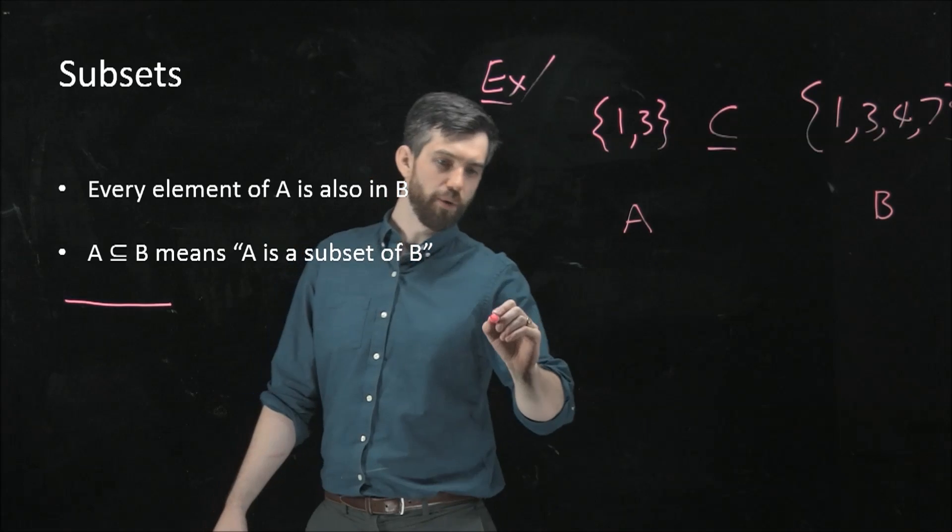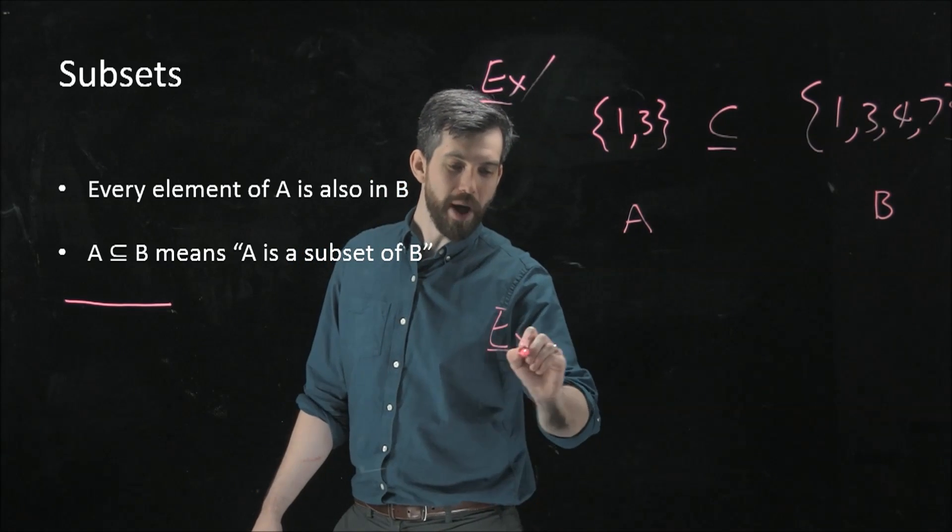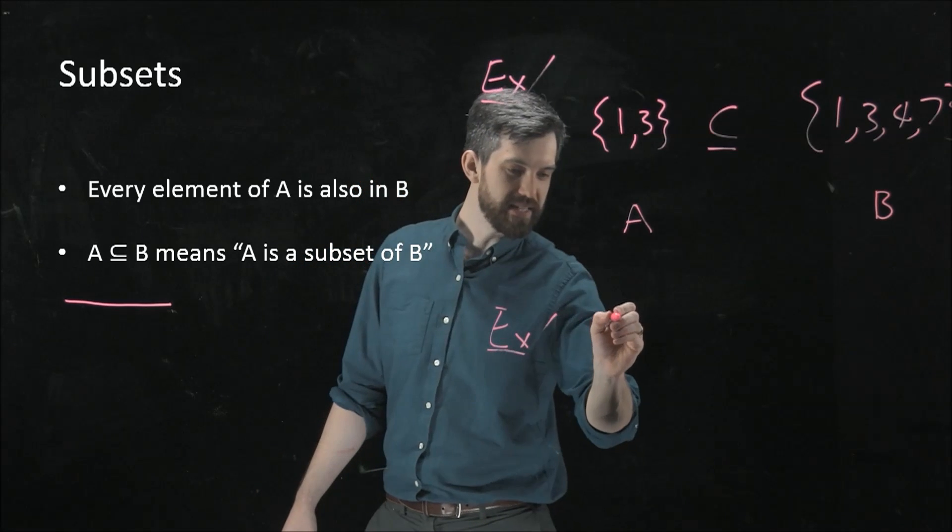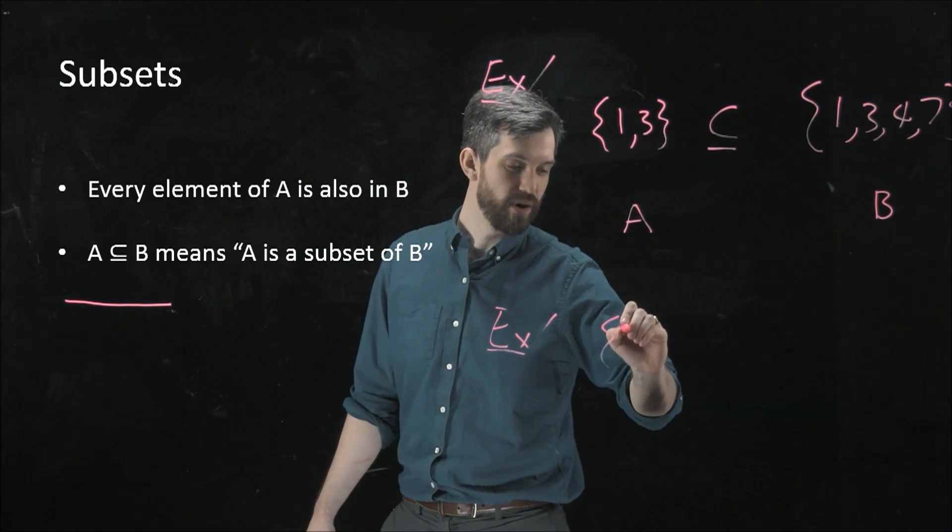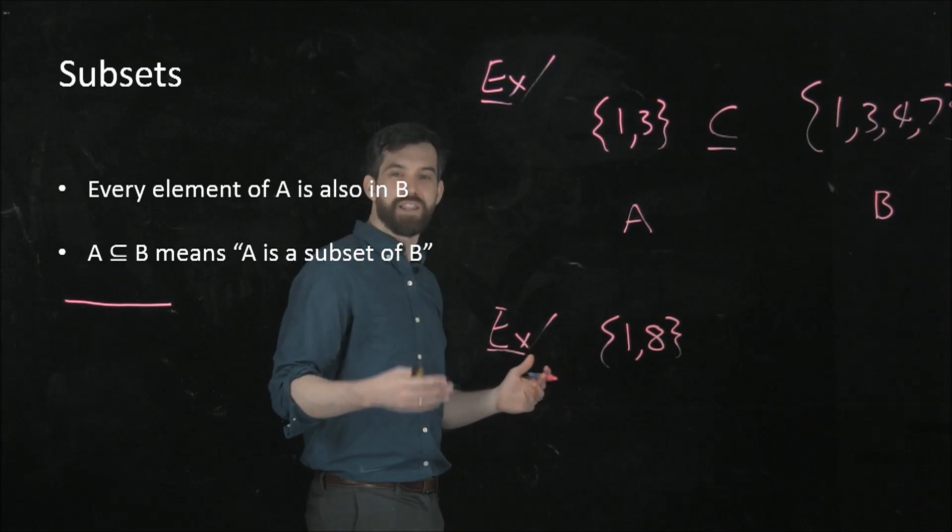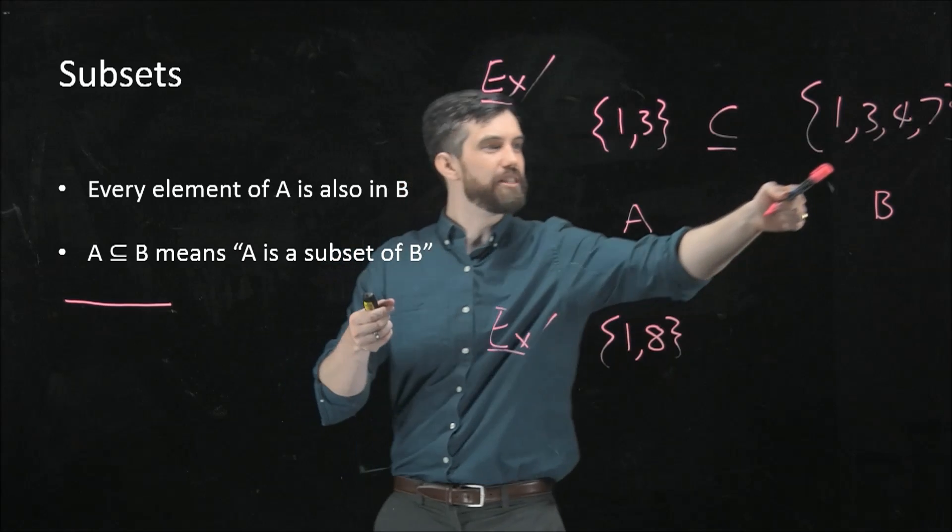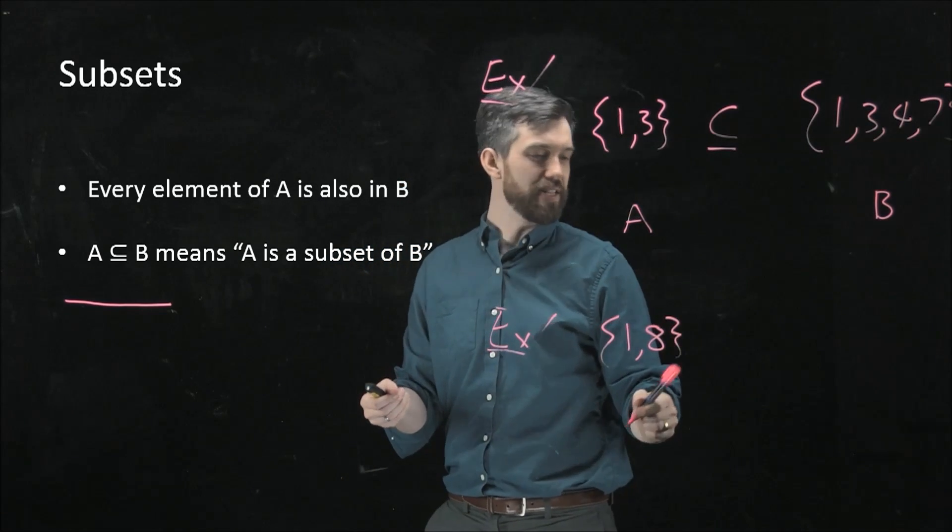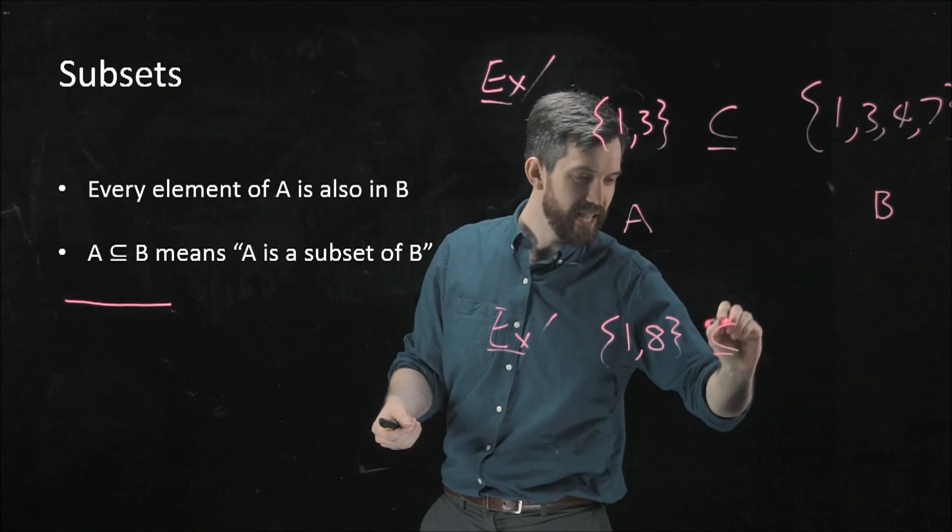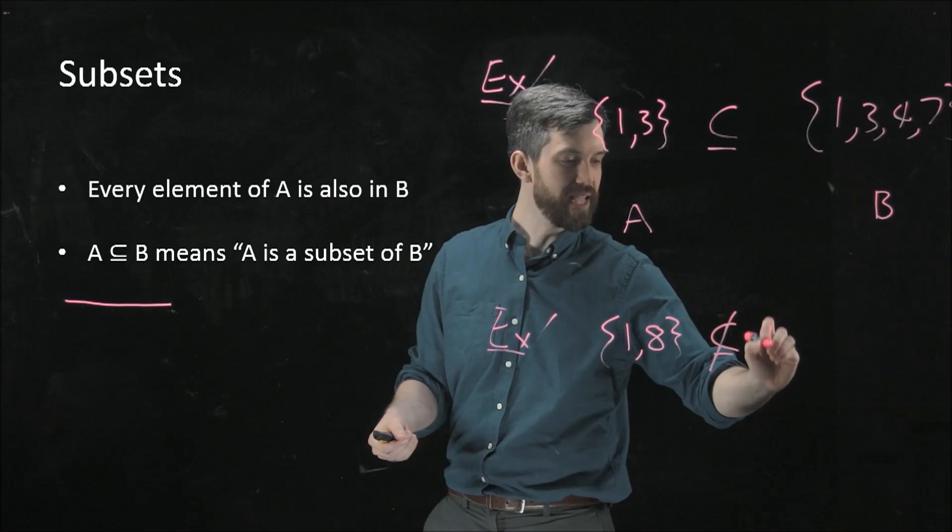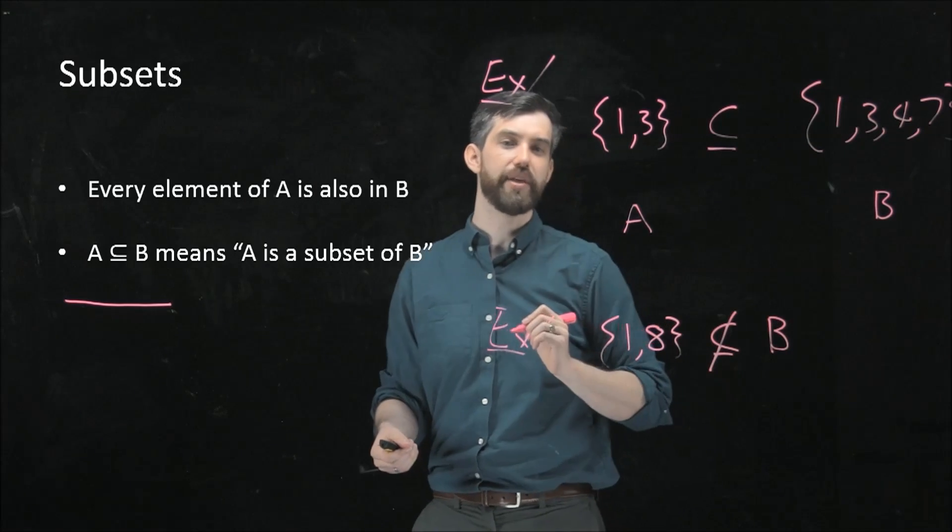As a second example, we could go the other way around. What happens if it's not going to be a subset? How about this? I'm going to take the set {1, 8}. Now, 1 and 8, the 1 is inside of this B over here. But {1, 3, 4, 7}, there's no 8. So this is not a subset. I write a subset symbol and I put a line through it. This is not a subset of the same B that I had above.